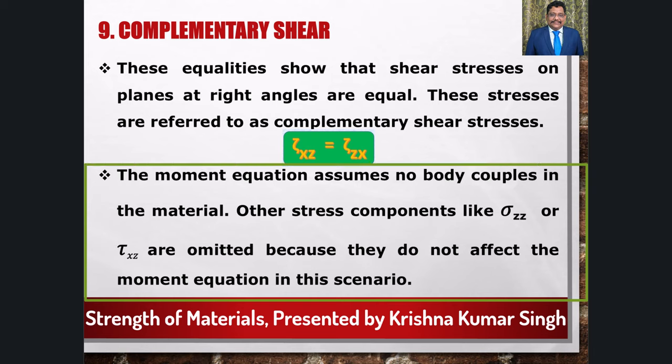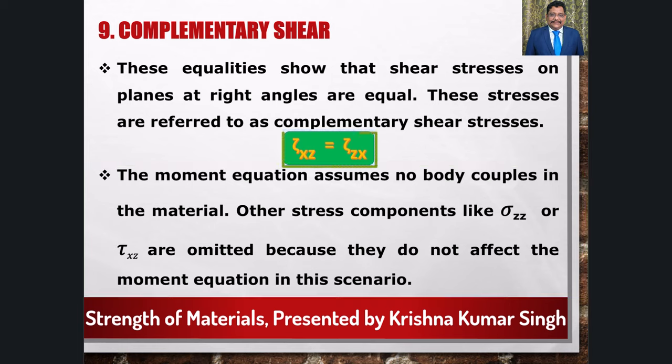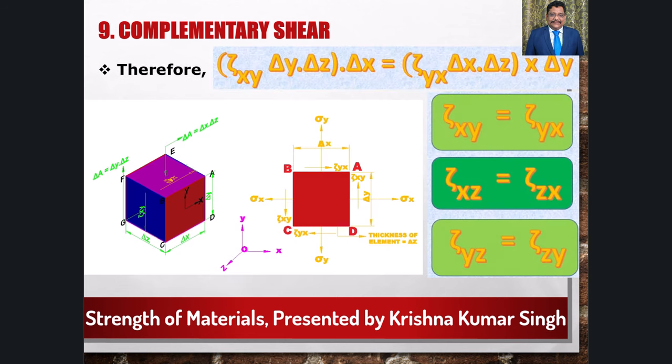This result holds when there are no body couples in the material. Note that stress components like sigma(zz) and tau(xz) are not shown in the figure as they do not contribute to the moment equation. This can be shown similarly for tau(xz) = tau(zx) and tau(yz) = tau(zy). We can infer that shear stresses on mutually perpendicular planes are equal to each other, and they are called complementary shear stresses.